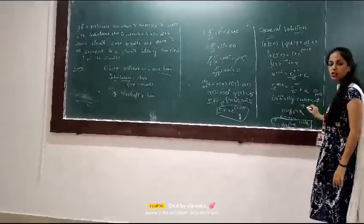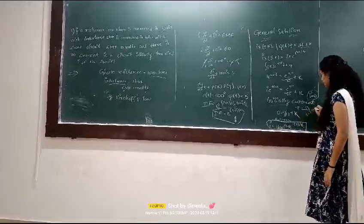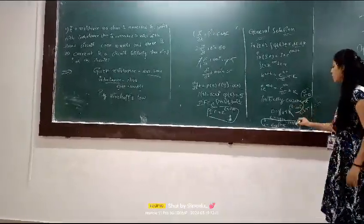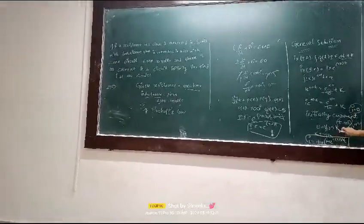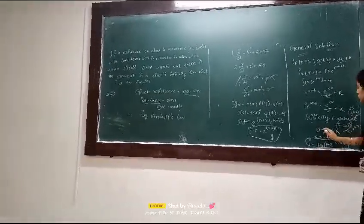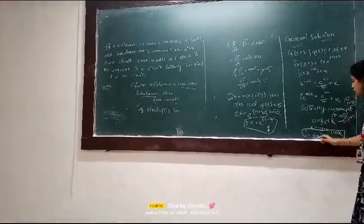The initial current is i equals 0 when time equals 0. So now we get 0 equals 1 over 10 plus K. The answer is K equals negative 1 over 10.